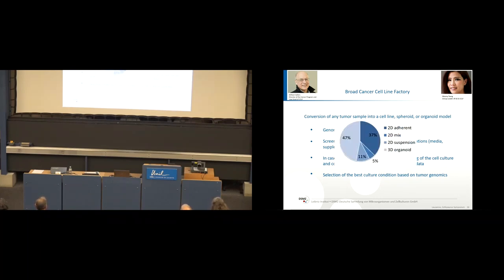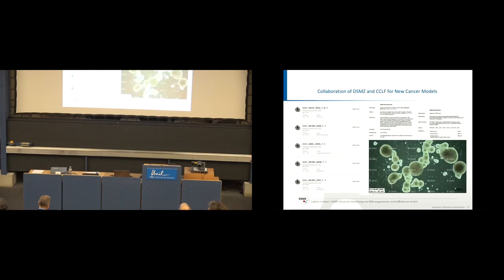They go then for the next neighbor. This is enabling a very close model to the original tumor. Finally, there's a selection of the best cultural condition based on tumor genomics. They are really successful. I never expected that they work out so a tremendous amount of cell lines from rare and really difficult tumors. Over 700 models they got so far. Look at this, 47, so nearly half of all these 700 models are of 3D and organoid morphology. This is showing us that this will be part of the future, also at DSMZ. We have a nice cooperation.